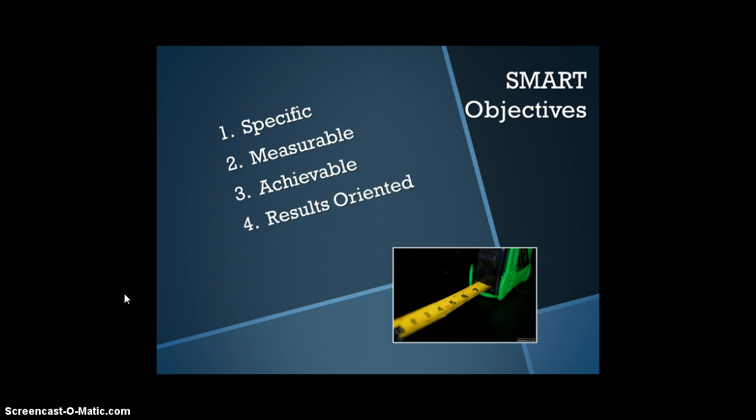R for Results-Oriented. Objectives should identify resource endpoints and or conditions representing their achievement. For example, a results-oriented habitat objective might describe the natural conditions expected when the objective is achieved.